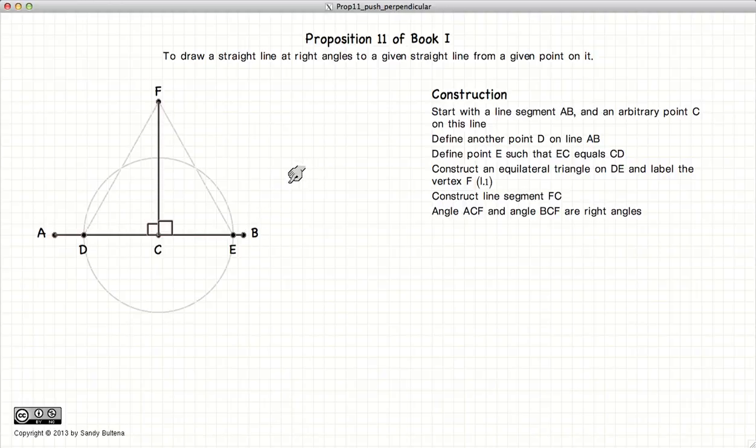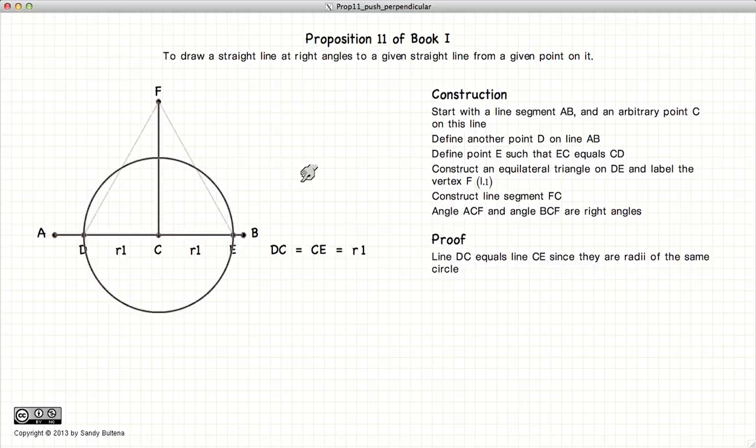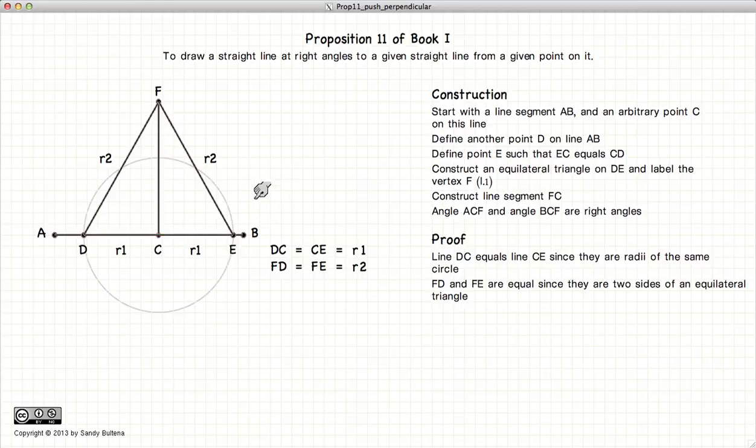So how do we go about proving this? That this is true in fact. Well we know that this line segment is equal to that line segment because they are the radii of the same circle. We know that this line segment is equal to that line segment because there are two sides of an equilateral triangle.